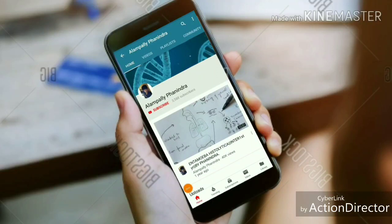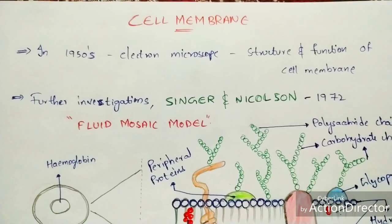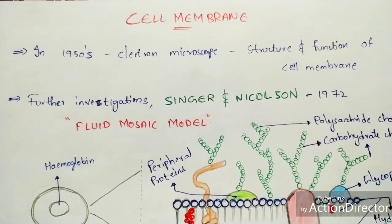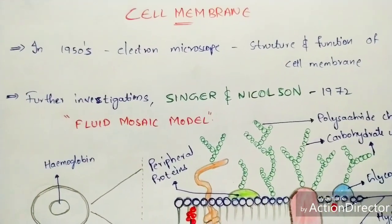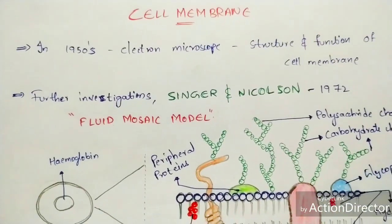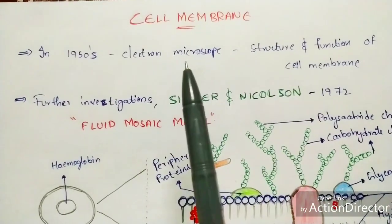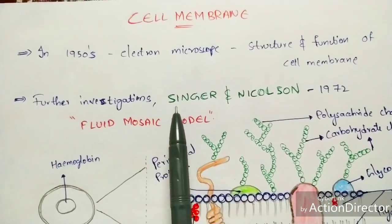In this video, let us discuss about cell membrane. In the 1950s, with the help of an electron microscope, the structure and function of the cell membrane was discovered. Further investigations were done, and Singer and Nicholson in 1972 described the cell membrane as a fluid mosaic model.